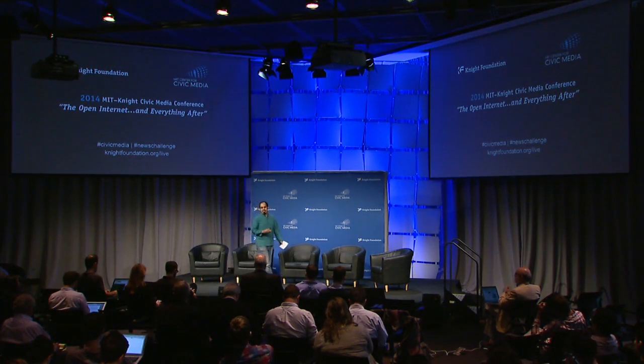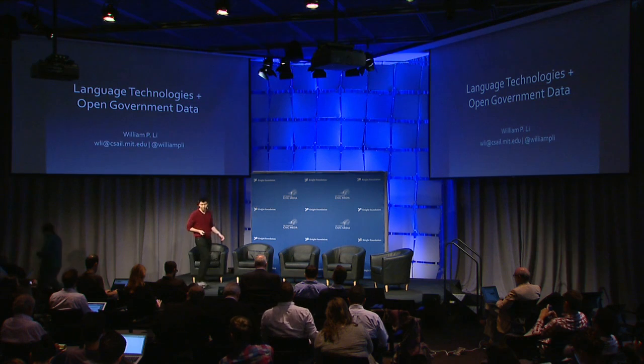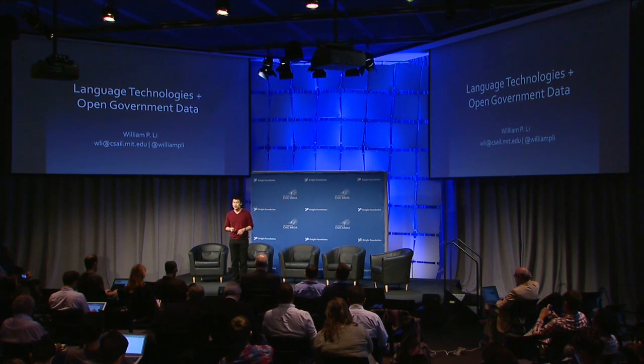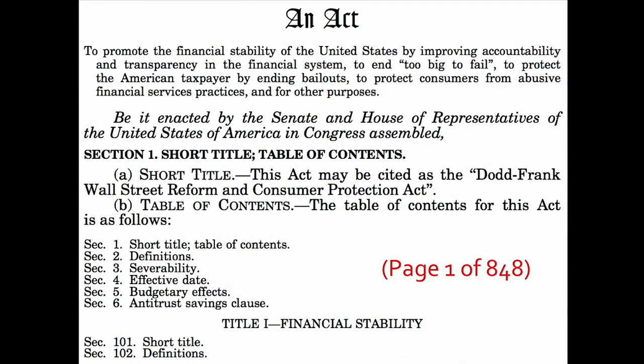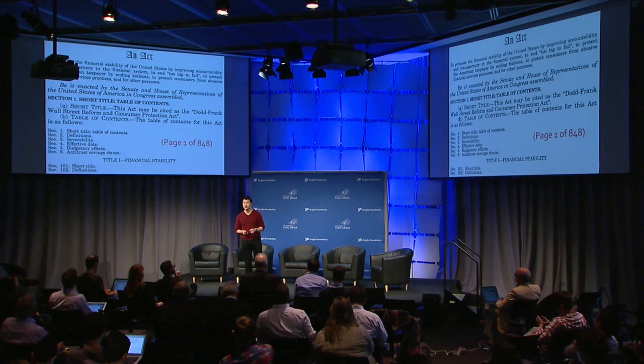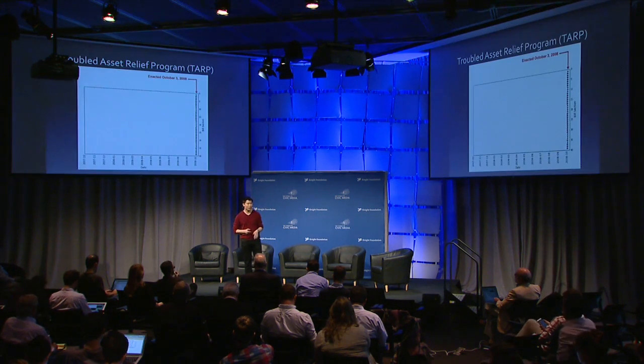That's one of a handful of examples of taking data we've been able to acquire in lots of different places and driving journalist action. The next speaker, William Lee, is another example of using data to drive action. My name is William Lee and I'm a PhD student in computer science here at MIT. I want to talk about a particular project — Bill Tracer — that came out of Ethan's class on the future of news and civic media, and some thoughts on analyzing open government data.